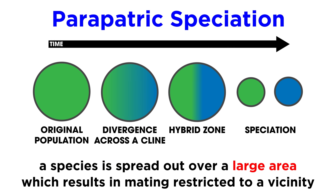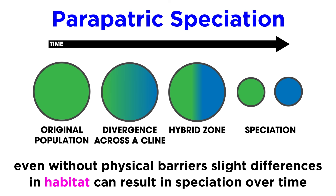And in parapatric speciation, a species is spread out over a very large geographical area, which results in individuals only mating with those in their immediate vicinity. Although in this instance there are no rigid physical barriers, slight differences in habitat within the larger area can result in speciation over time, as subpopulations explore the various niches within the habitat.